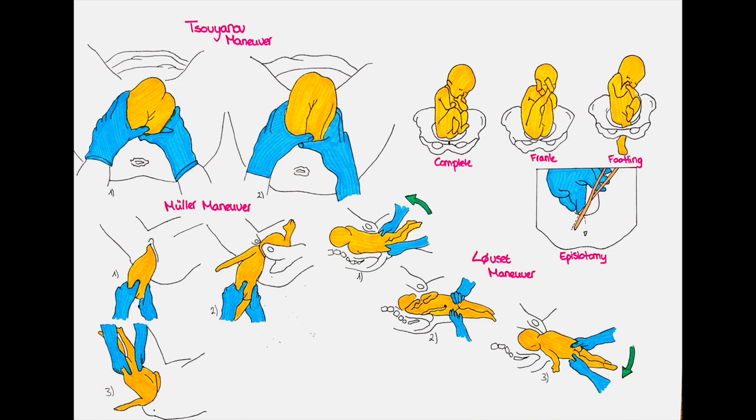The maneuvers in breech delivery are divided by which part of the baby we help to deliver — the arms or the head. We will first talk about the maneuvers for delivering the arms, as they are born before the head in a breech delivery. The doctor starts assistance of the delivery of the arms when the scapula is visible. The three maneuvers for delivery of the arms are the Müller maneuver, the Löwset maneuver, and the classic maneuver.